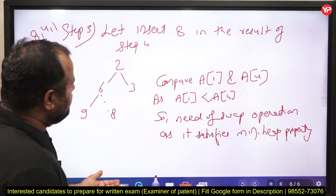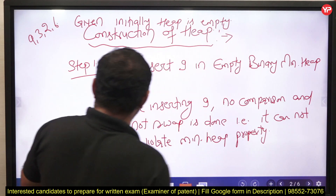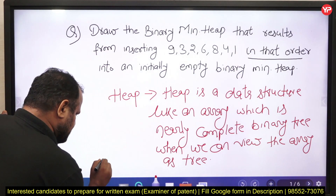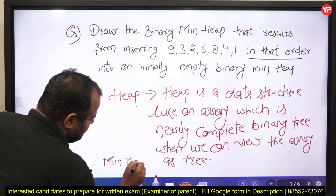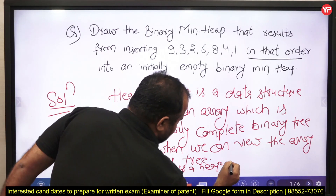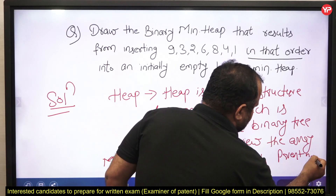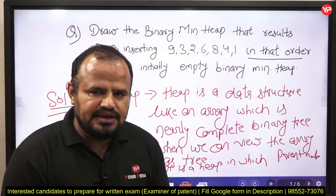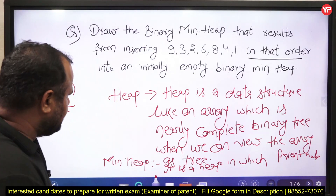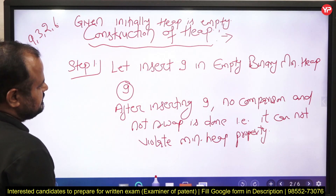At least you have to mention what do you mean by min heap. Min heap is a heap in which the parent node is less than or equal to the left child, and the parent node is less than the right child. So first write the heap definition, then the definition of min heap, then start your construction of heap.